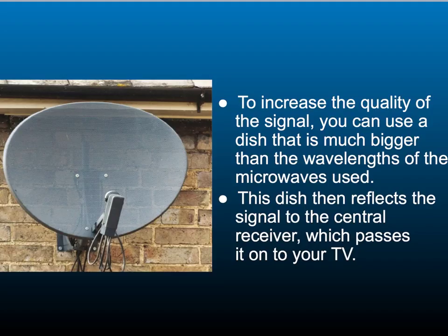To increase the quality of the signal, you can use a dish that is much bigger than the wavelength of the microwaves used. This dish then reflects all the signal to the central receiver, which passes it onto your TV.